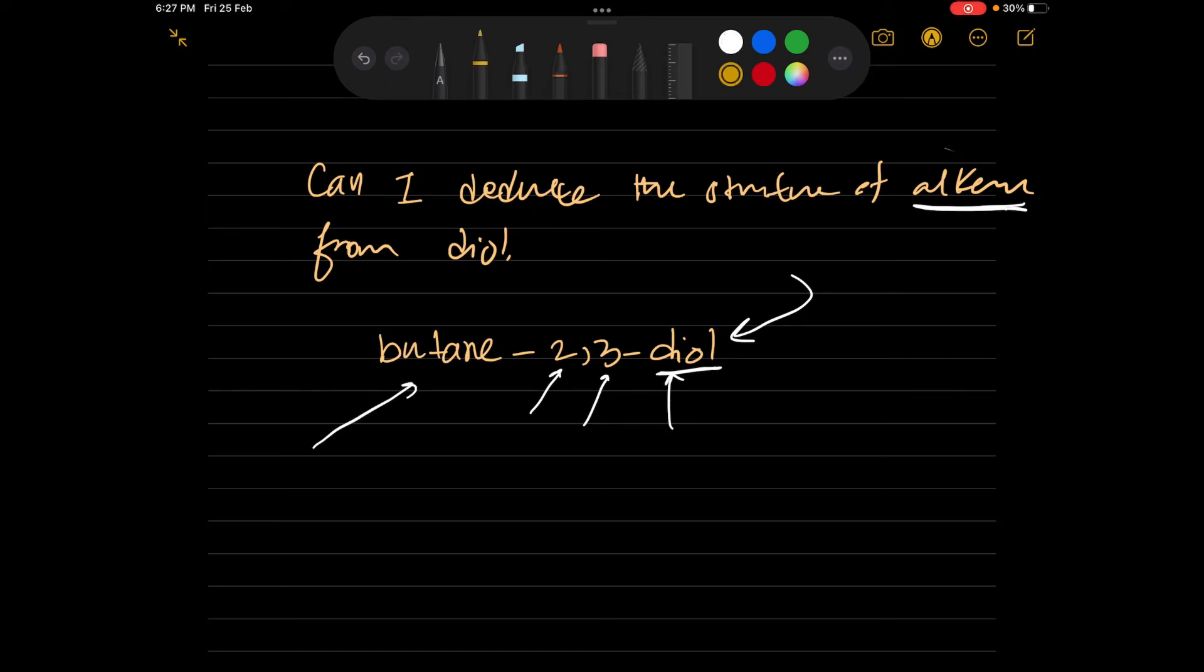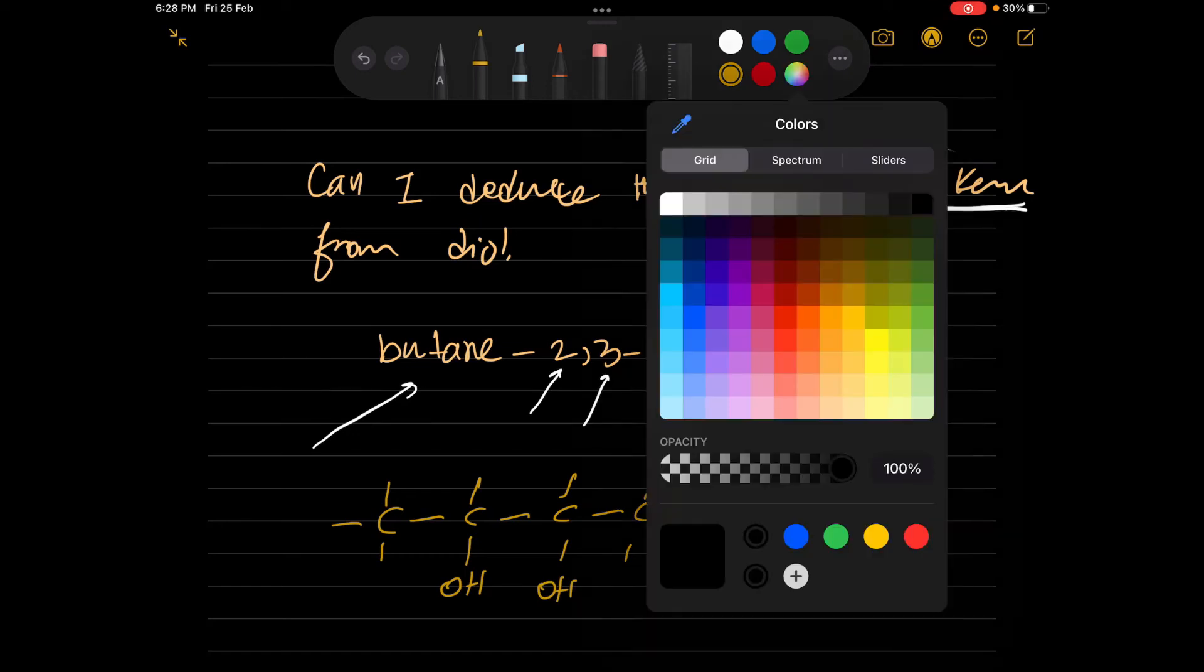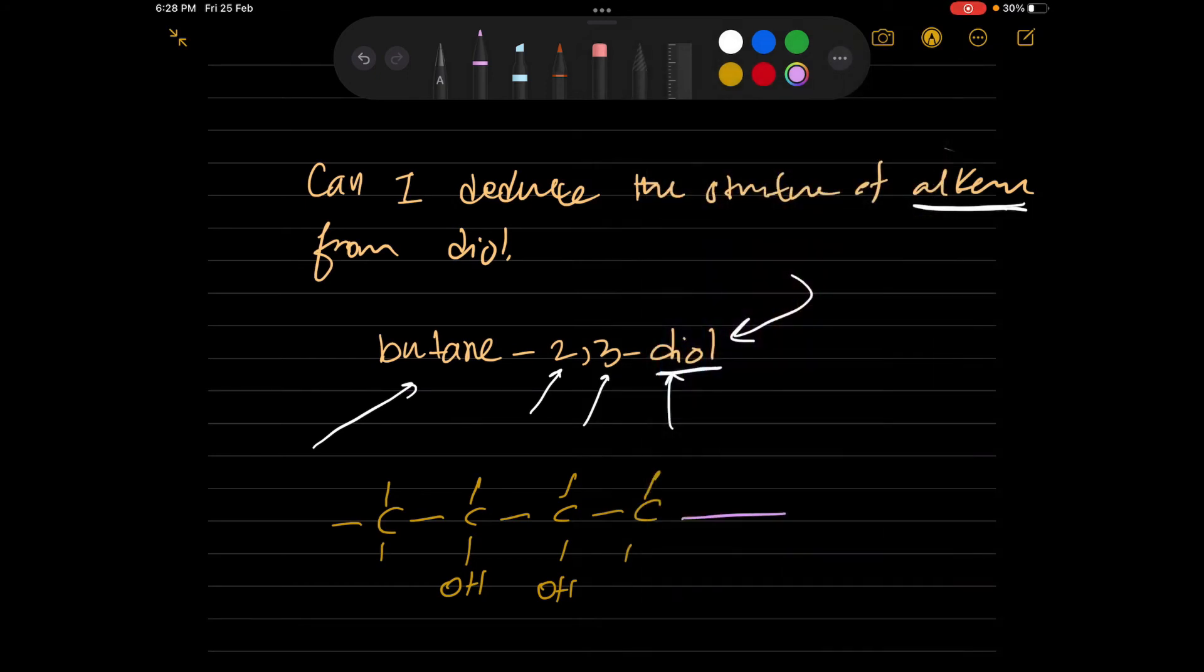The butane means 4 carbons. We have 4 carbons. When we say 2 and 3 diol, it means we have OH group in carbon number 2 and OH in carbon number 3. And now my process is, how can I change it to alkene? We oxidize the alkene to take this compound. But if I want to take the original one, you have to make a double bond between carbon 2 and carbon 3. So the compound will be but-2-ene.